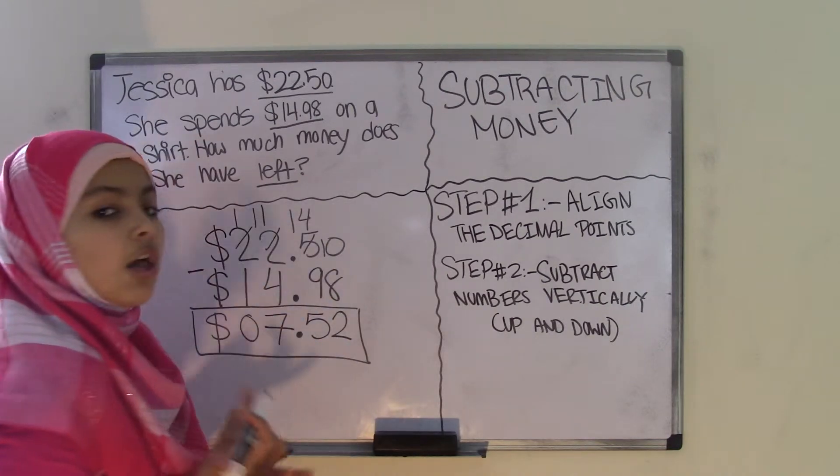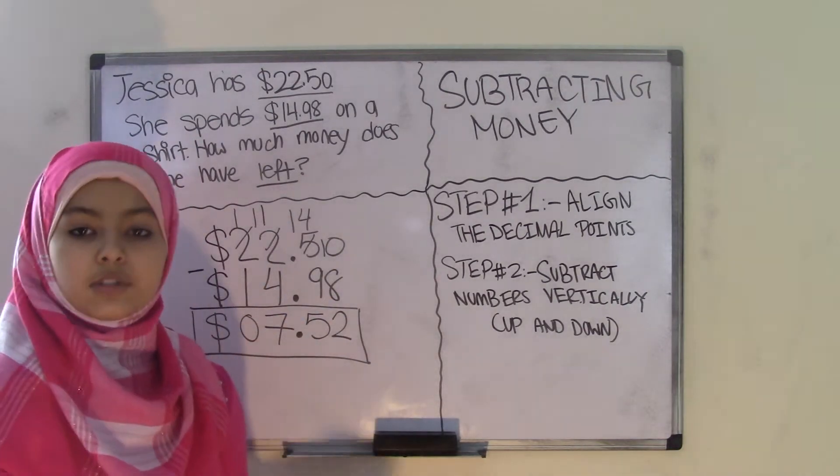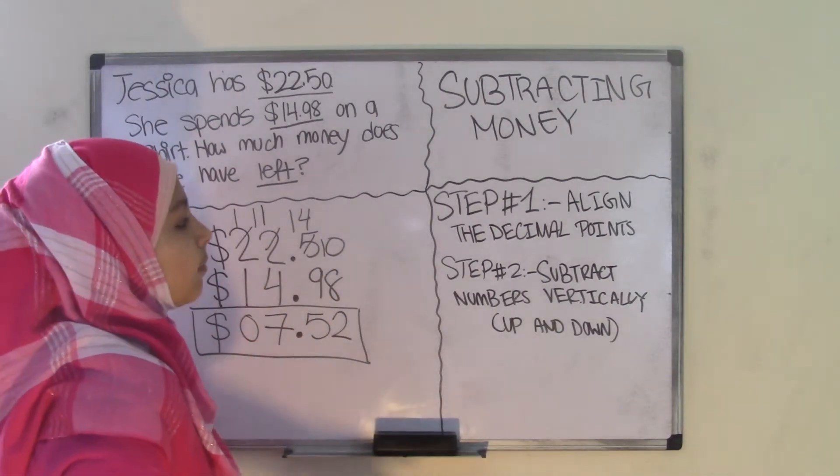That means Jessica gets $7.52 back as her change. So that's how you subtract money.